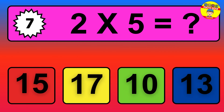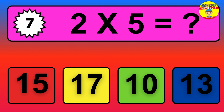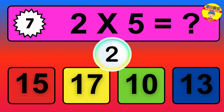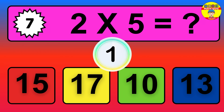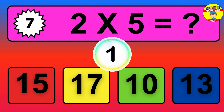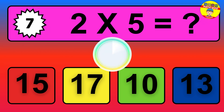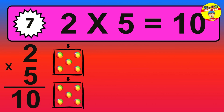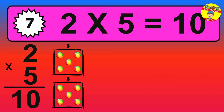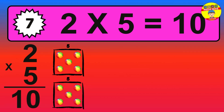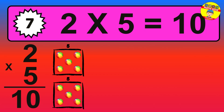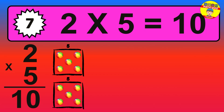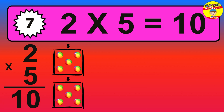Question seven: two times five equals what? The answer is two times five is ten. To calculate, we have two groups with five balls each one. So how many balls do we have? Ten balls.